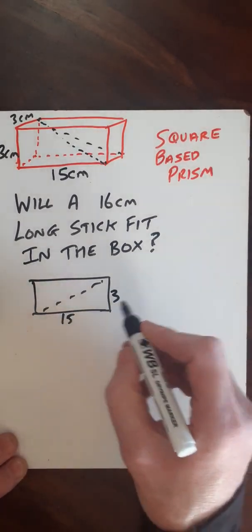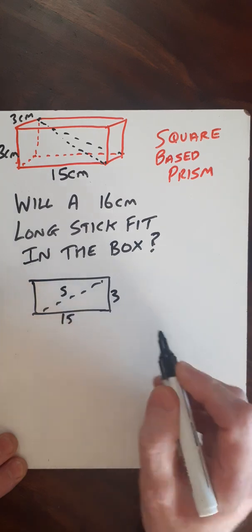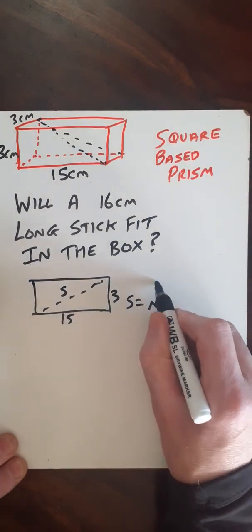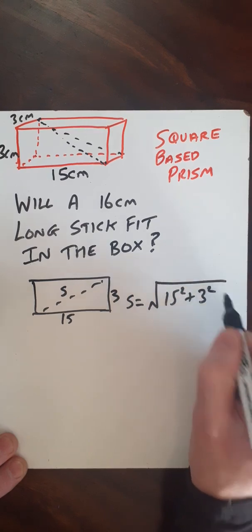And then by Pythagoras and the sum of the squares, this one here, this side length s, that would be square root of 15 squared plus 3 squared.